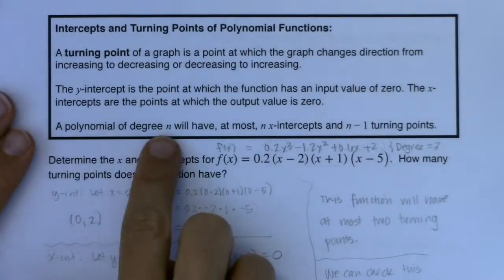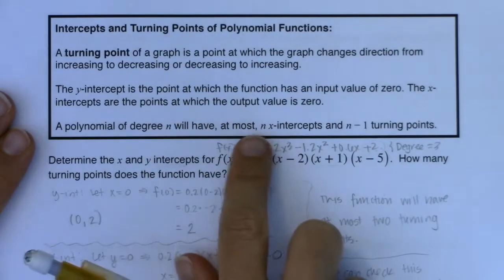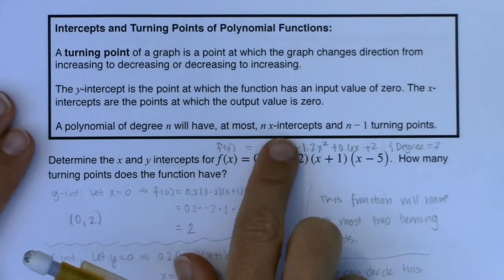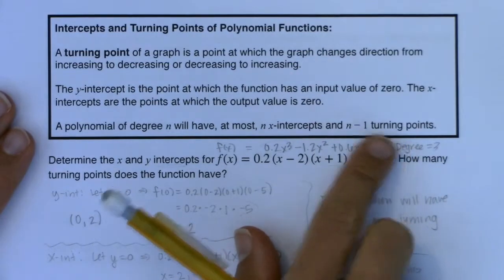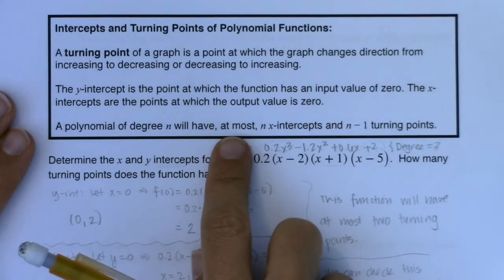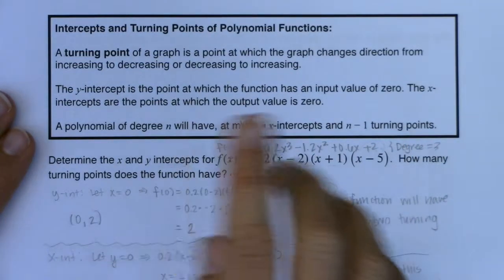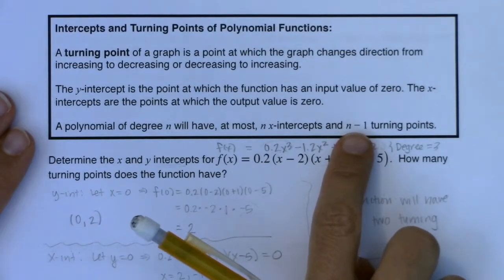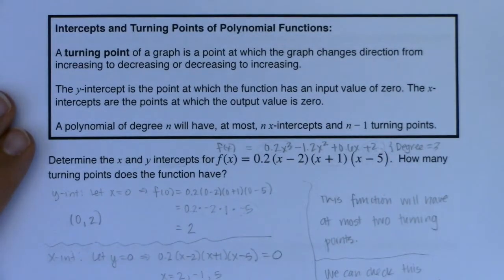It says a polynomial of degree n will have at most n x-intercepts and n minus 1 turning points. So the highest number of x-intercepts is going to be n of them, whatever that degree is. And then the largest number of turning points would be n minus 1 turning points.